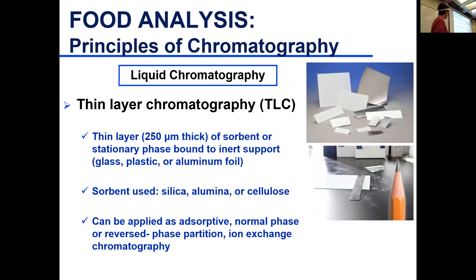The sorbent layer is about 250 micrometers thick. The inert support can be glass, aluminum, or plastic. The sorbent is typically silica, alumina, or cellulose.